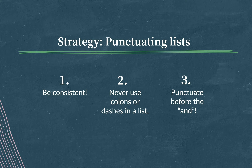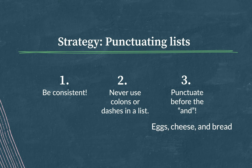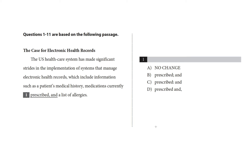For example: eggs, comma, cheese, comma, and bread. The comma goes before 'and,' not after. All right, let's go back to the question. And if you want, you can pause the video here and see if you can answer this question without me.